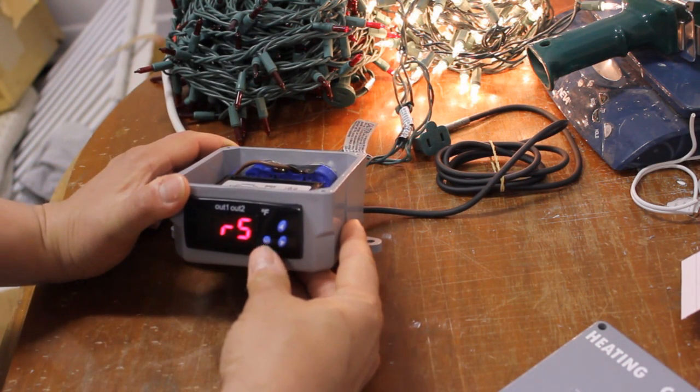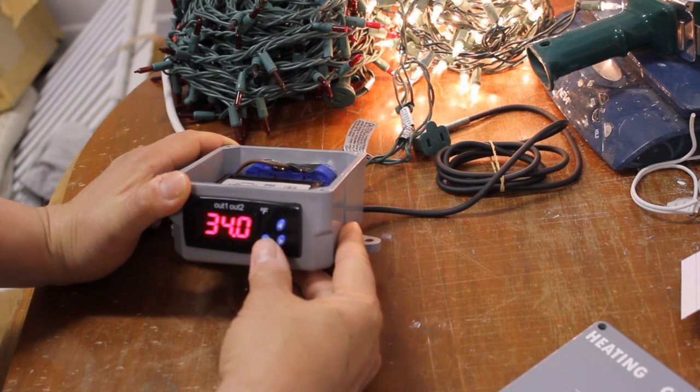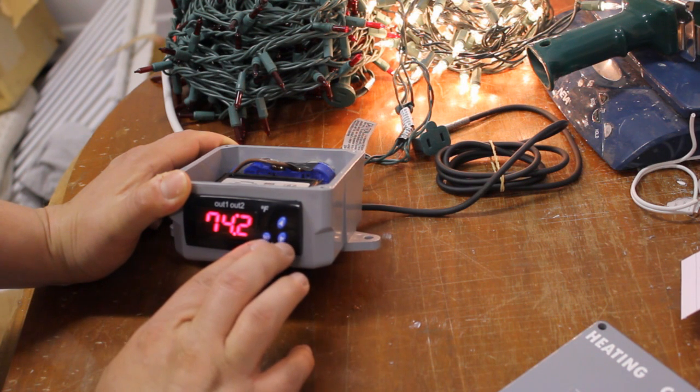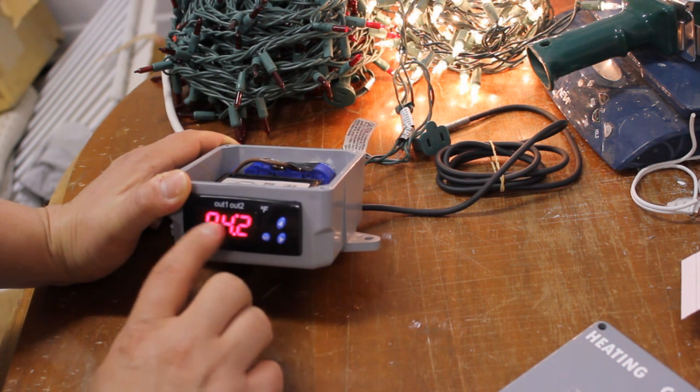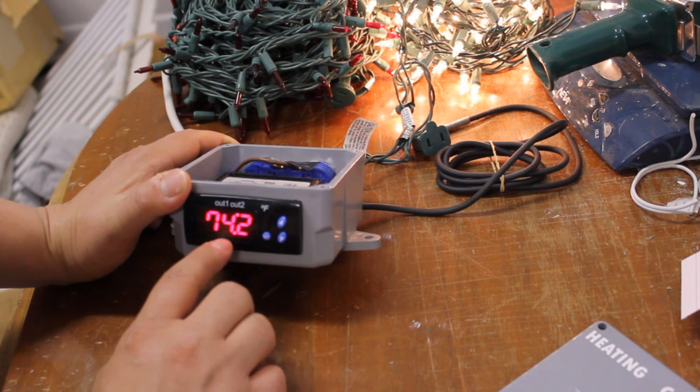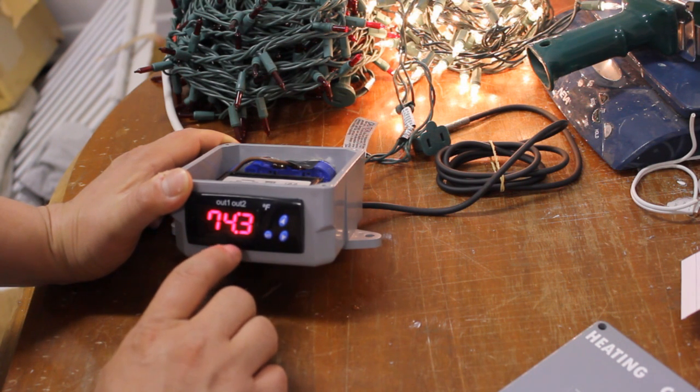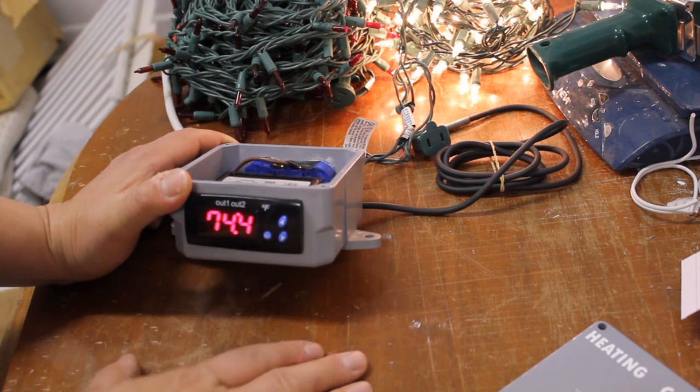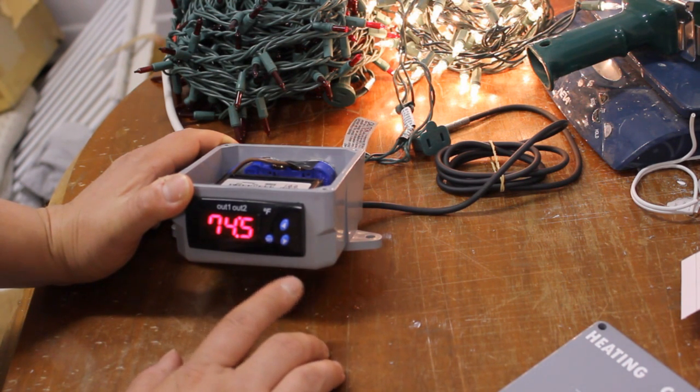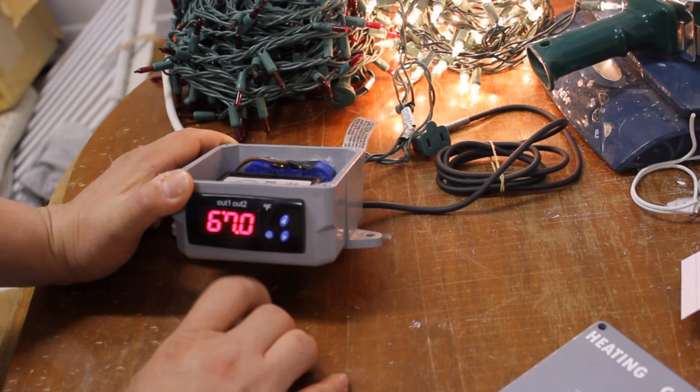One of the things that I wanted to also mention is that once you're out of the programming mode which you do by pressing set and down at the same time, the default reading on the screen here is the actual temperature as measured by the probe. And once you set sort of the background parameters setting your heating and cooling set points is relatively easy just by pressing the set button.